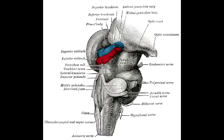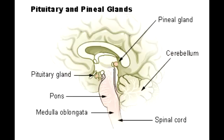Describe the picture of the brainstem dorsal view. In this picture you see the pineal body, the superior colliculi, inferior colliculi, superior cerebellar peduncles, middle cerebellar peduncles, fourth ventricle, and the medulla.